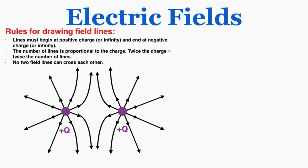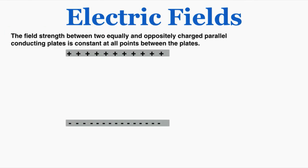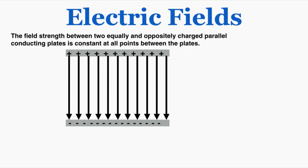The field strength between two equally and oppositely charged parallel conducting plates is constant at all points between the plates. You need to know that the field strength between two parallel conducting plates is the same at every point between them, as long as they're of opposite charge and equal magnitude, but you don't need to know the specific reason why. So if we looked at the electric field strength at any point, it's going to be the same — say, 5 newtons per coulomb everywhere.